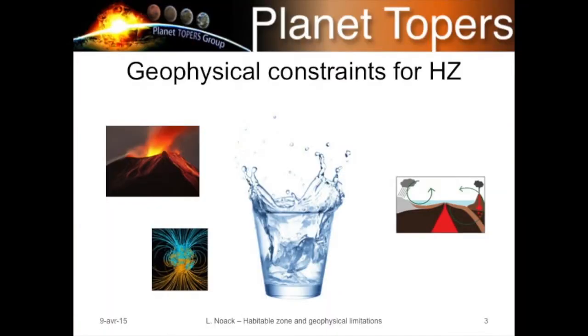When we talk about the habitable zone, we typically think about one thing only: water. But I hope by the end of this talk I'll have convinced you that these three geophysical factors — volcanism, plate tectonics, and the magnetic dynamo — might also play a role in defining the habitable zone itself.